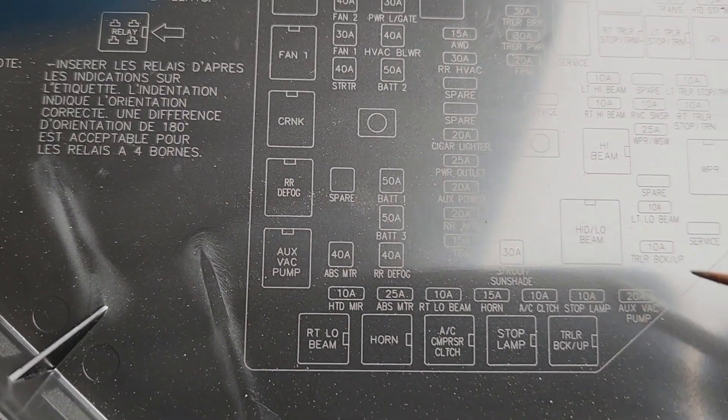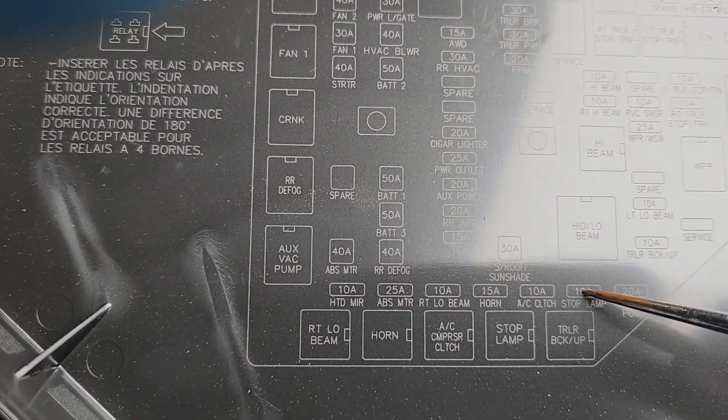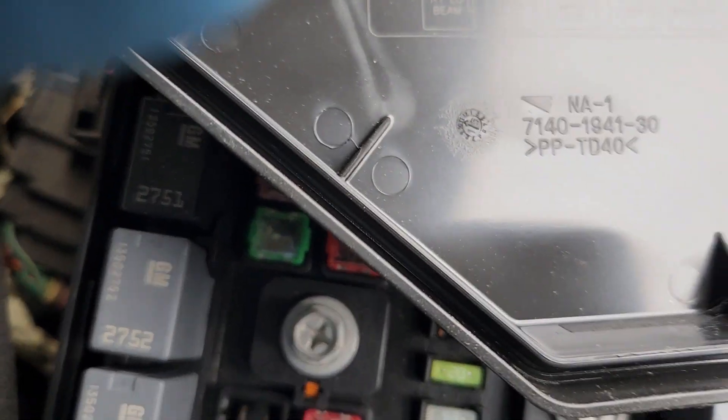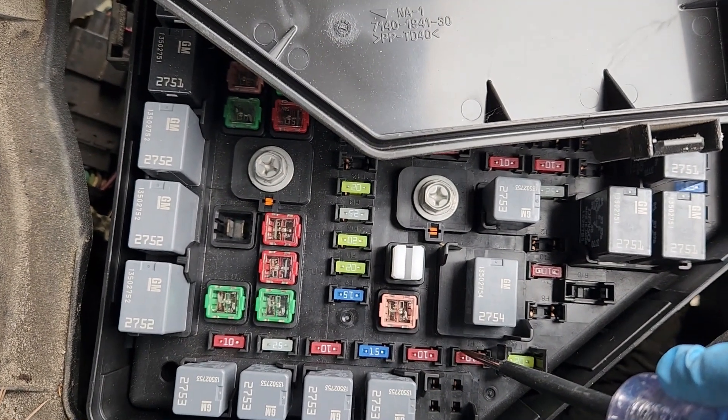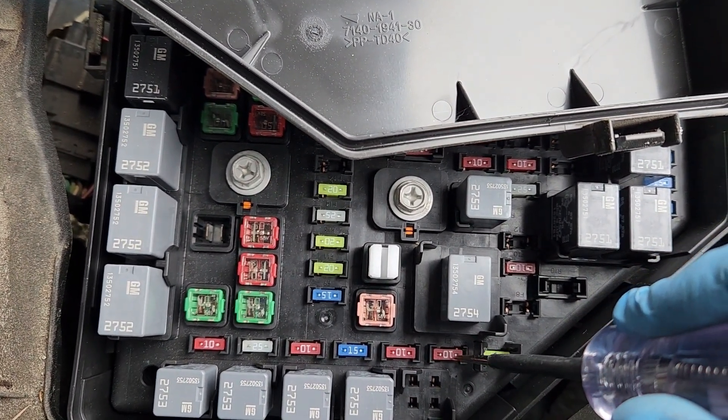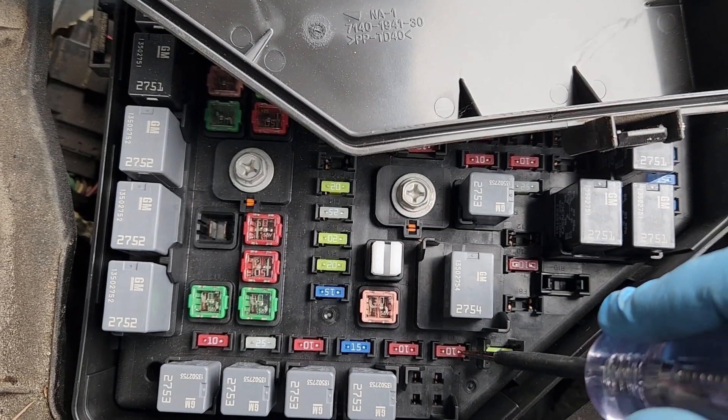And here we go. We have the stop lamp fuse in the under hood fuse box. Here's the stop lamp fuse in the under hood fuse box. I'm going to test it. You see power there. No power there,